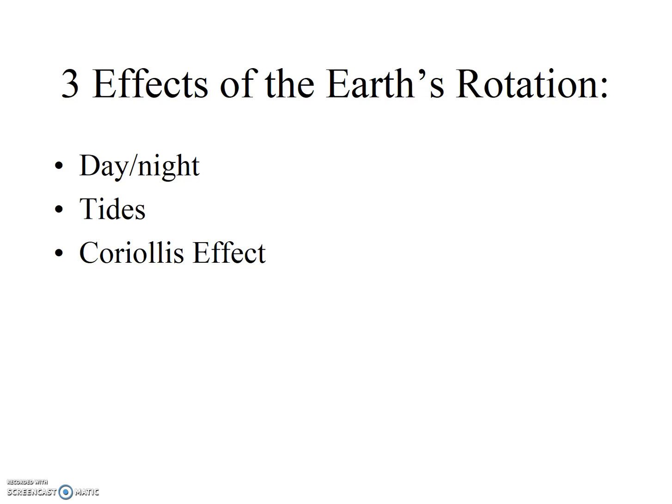Again, we'll study this later in the course. For now, just understand what we mean by the Coriolis effect. It's an apparent deflection of free-moving fluids to the right in the northern hemisphere and to the left in the southern hemisphere, due to the varying speeds of different latitudes as the Earth rotates.